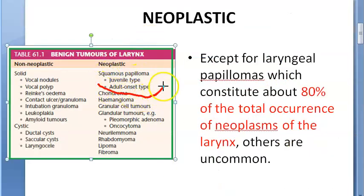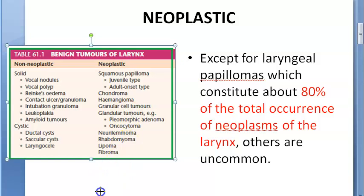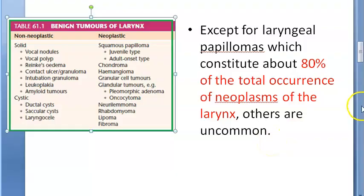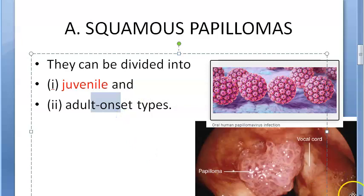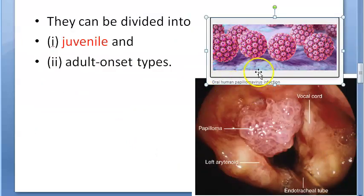In this video we will cover squamous papilloma because it is very important for the exam and very common — 80% of all benign laryngeal neoplasms are squamous papilloma. There are two types: juvenile type and adult onset type. The juvenile type is especially important because it is a recurrent condition, whereas the adult type is less dangerous.